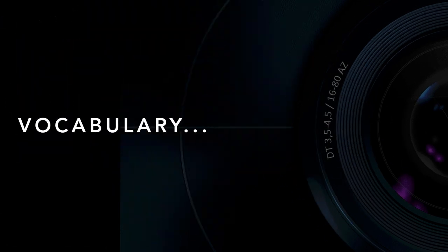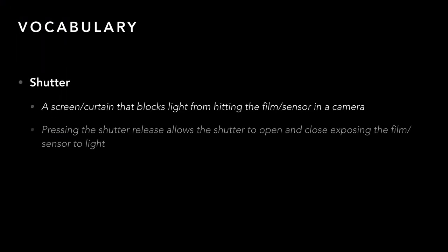First we need to start with some vocab. We need to review shutter — the thing that blocks light from hitting the film or your sensor. The timing that we use on that: the longer it's open the more motion it will show, the less time it's open the less motion it will show.